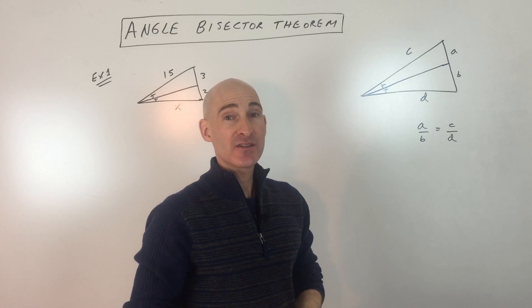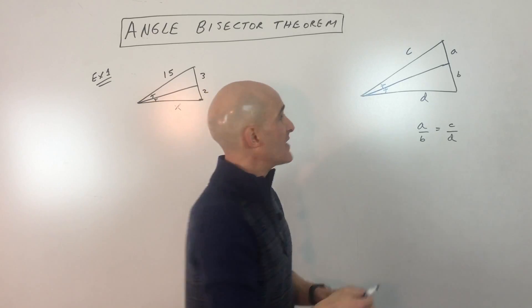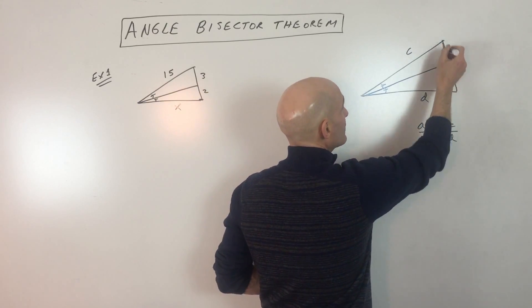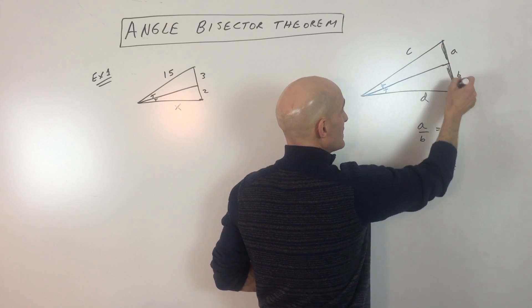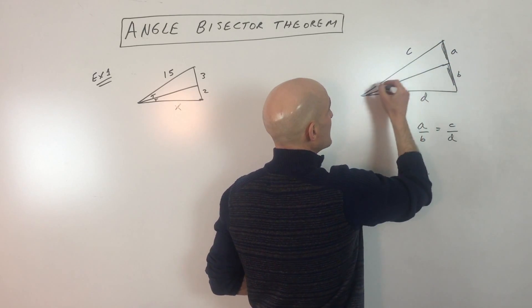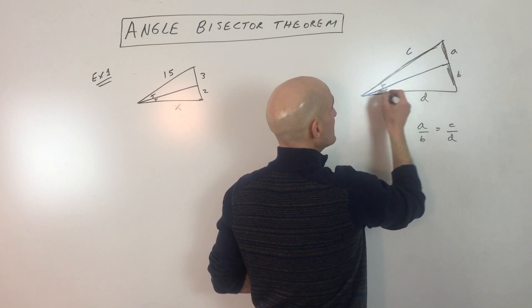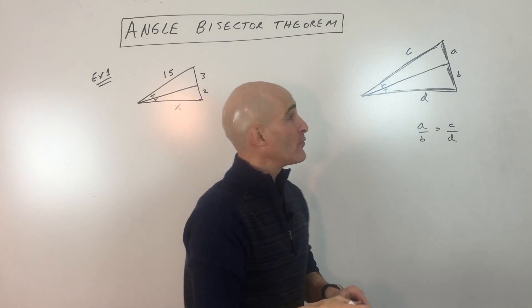So what ends up happening is that there's a proportion that develops that we can utilize, and that's that the ratio of A to B is the same as this side, C is to D. So very simple.